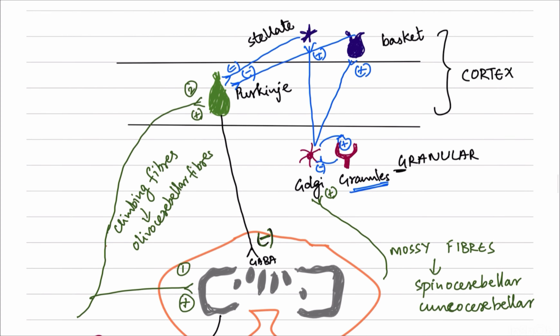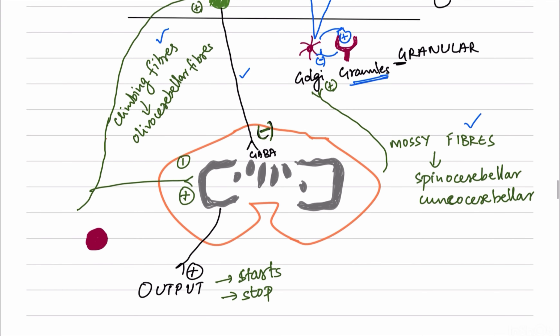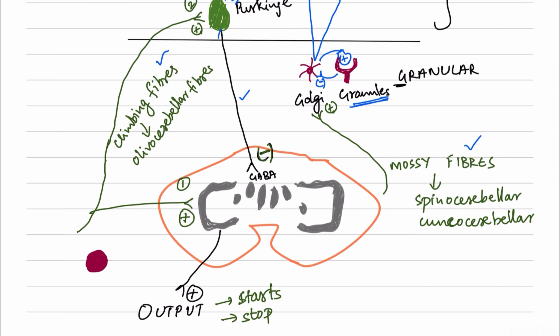In summary, the cerebellar connections involve input in the form of climbing fibers and mossy fibers, and output through the Purkinje fibers to the deep nuclei. Stellate and basket cells inhibit the Purkinje fibers. The Purkinje fibers inhibit the deep nuclei. The deep nuclei are excitatory in nature. Importantly, there is also a direct connection between Purkinje fibers and the vestibular nuclei without involving the deep nuclei, which is relevant to the vestibulocerebellum.